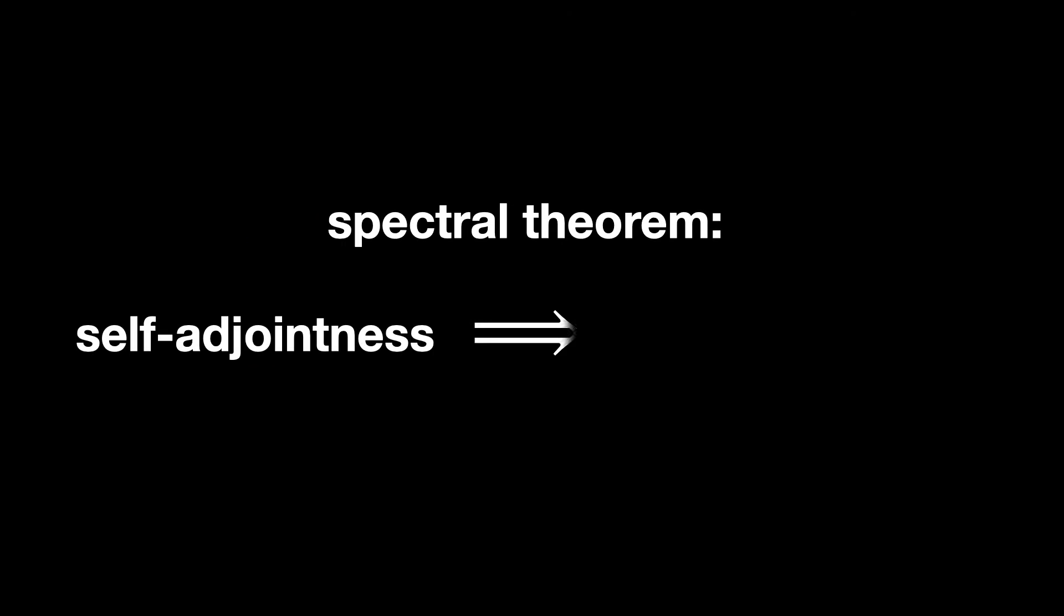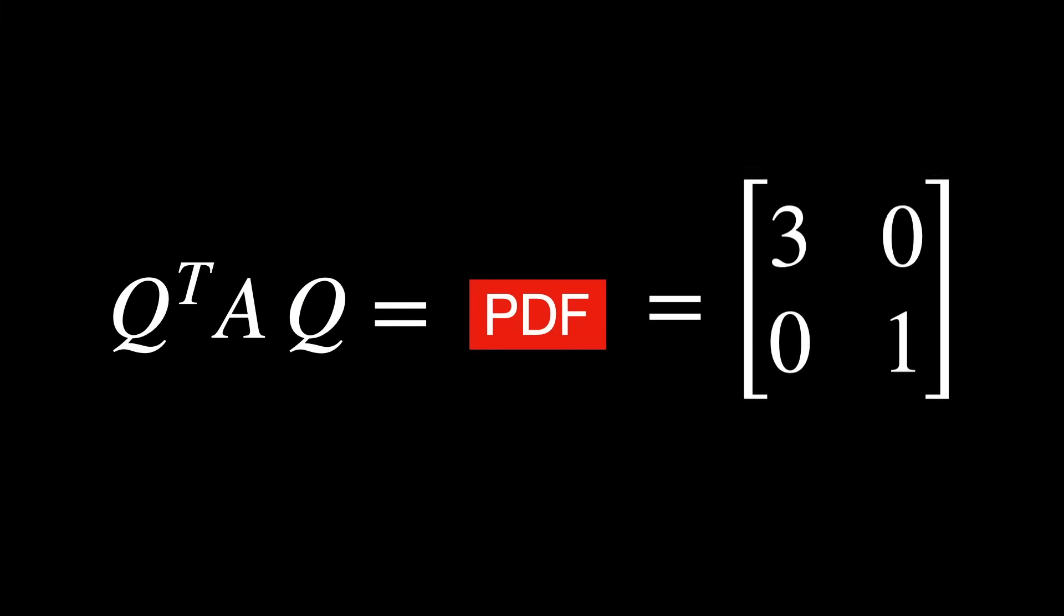Beyond that, since the operator A is self-adjoint, the spectral theorem says that self-adjointness implies diagonalizability. In other words, in this basis, the matrix becomes 3, 0, 0, 1. In the PDF link, we show in detail how to get to this result. Indeed, 3 and 1 are the eigenvalues we found before.